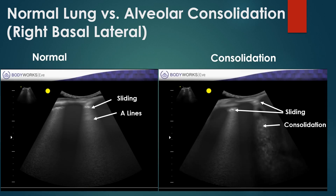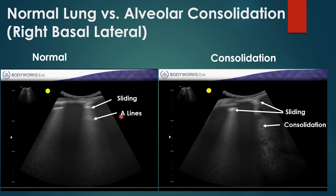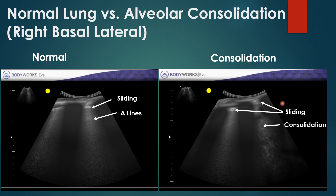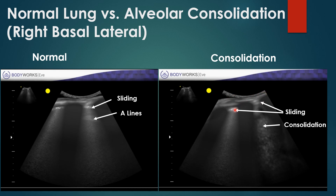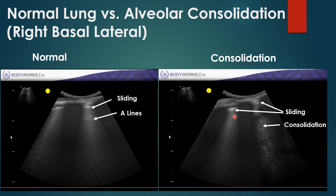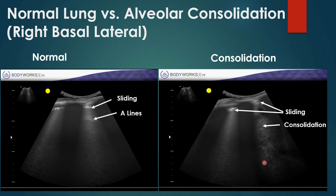Looking at normal lung versus consolidation: on the left you see the typical pattern with sliding, nice A-lines, and rib dropout shadows. On the right with consolidation, you have a curvilinear transducer at the pleural line with some sliding, but instead of a normal non-reflective A-line pattern, you have consolidation — the lung is starting to look more like an organ. Signs of pneumonia require ruling out many things including bilateral versus unilateral involvement.